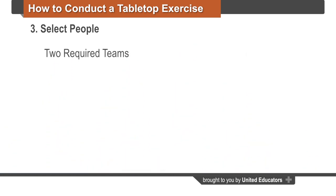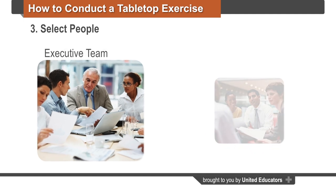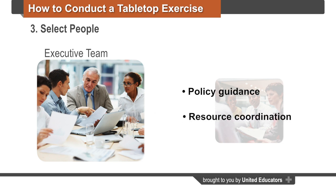Two teams that should be represented at every tabletop exercise are the executive team and the crisis response team. The executive team is there to provide policy guidance based on the situation and your crisis response plan, coordinate resources, and make decisions to support the crisis response team. It's important to decide who on the executive team needs to participate in the selected scenario. For example, if the scenario is an alleged sexual assault of a student by a coach, you may choose to include individuals who have oversight of student affairs, athletics, and administrative services.